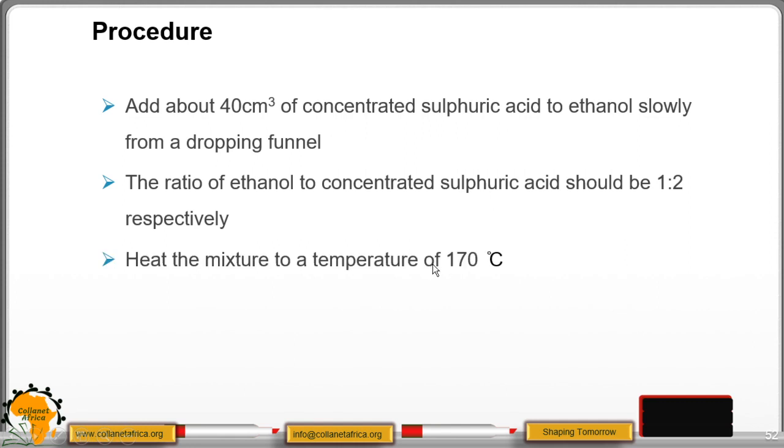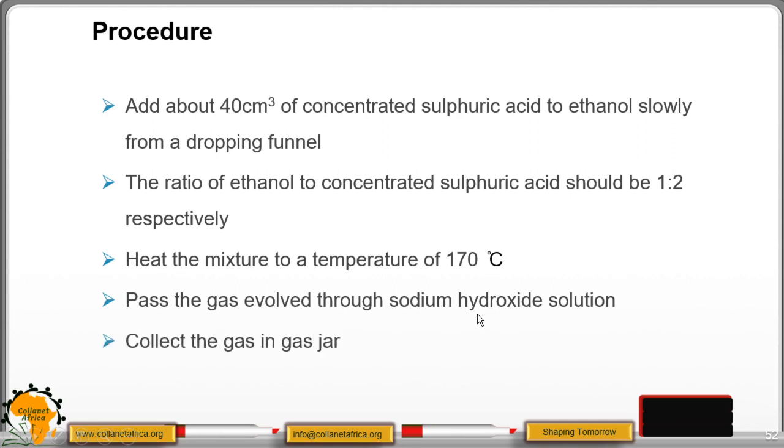Heat the mixture to about 170 degrees Celsius. Then pass the gas through sodium hydroxide to remove the carbon dioxide and sulfur dioxide. Then collect the gas in a gas jar.